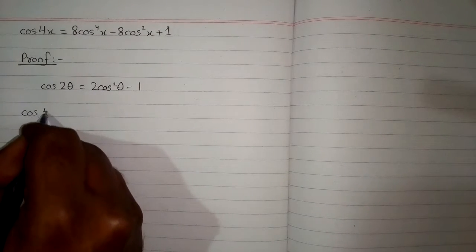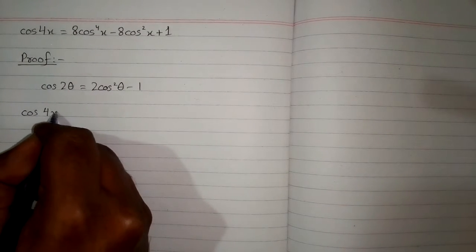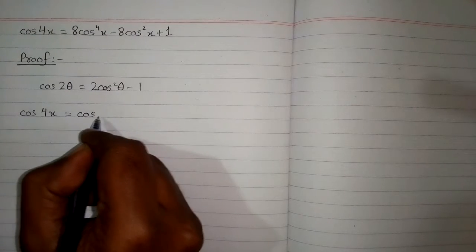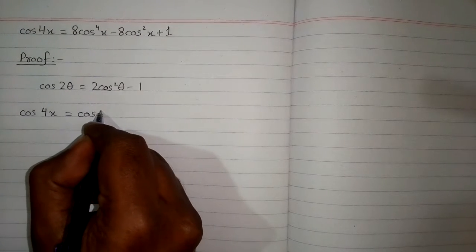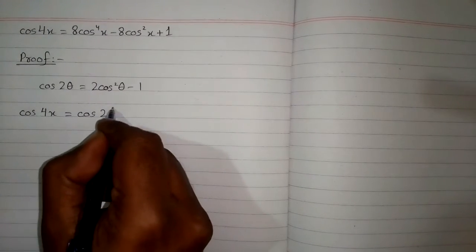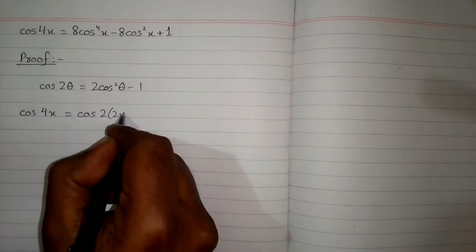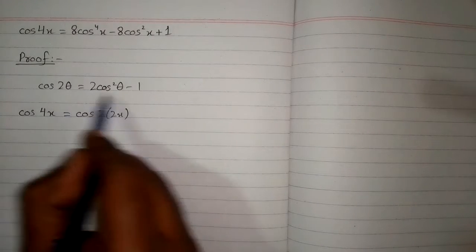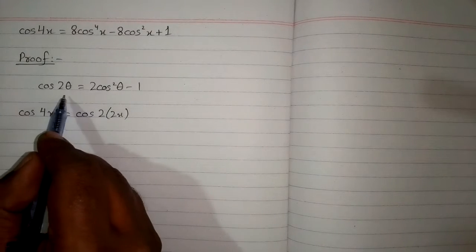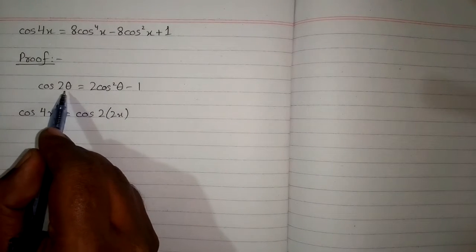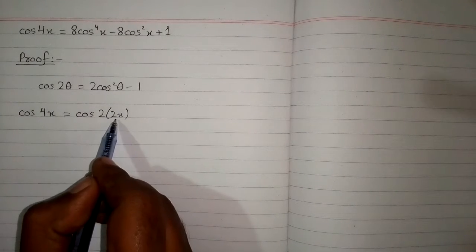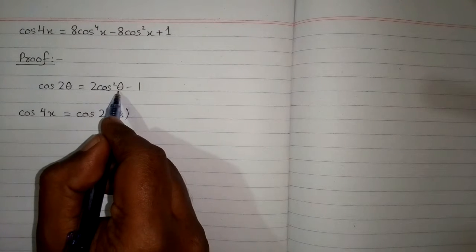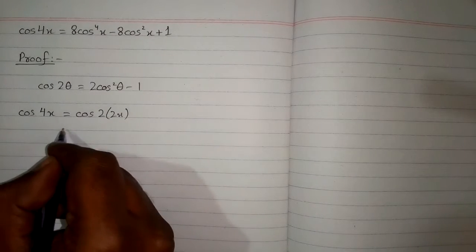We can write cos(4x) as cos(2 × 2x). We can apply this formula by letting θ = 2x, so we put 2x in place of θ.